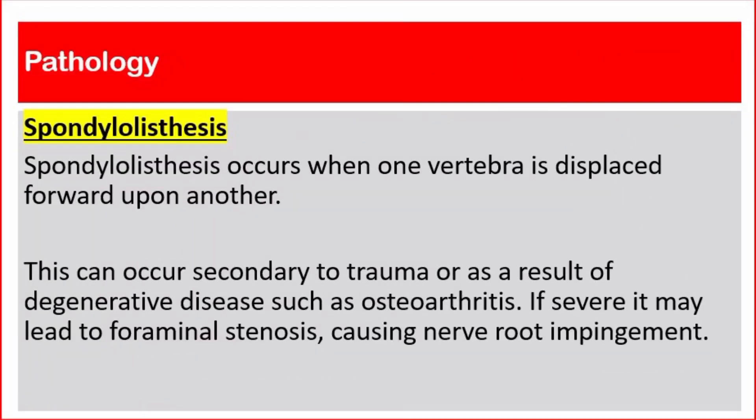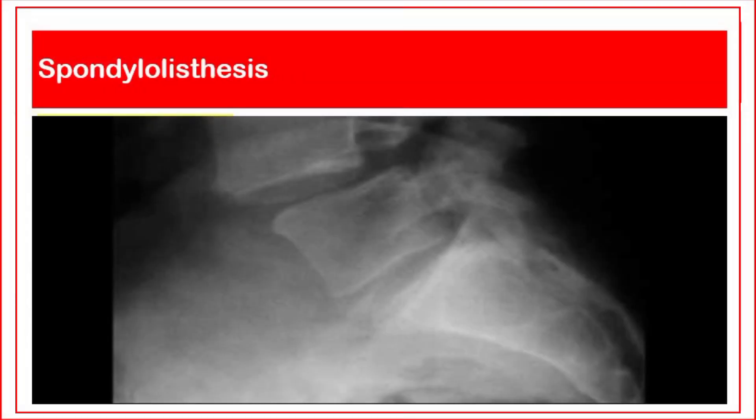The third pathology is spondylolisthesis. Spondylolisthesis occurs when one vertebra is displaced forward upon another. This can occur secondary to trauma or as a result of degenerative disease such as osteoarthritis. If severe, it may lead to foraminal stenosis causing nerve root impingement.